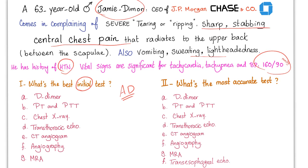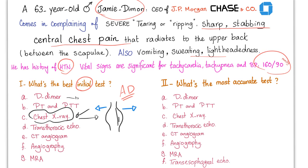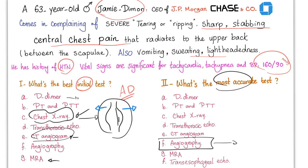What is the best initial test? Believe it or not, it's a chest X-ray — on your exam, always think cheap first. You would see a widened mediastinum because of the dissection. After that, you can go with CT angiography or MR angiography. But what's the most accurate test? Angiography — invasive angiography, where a probe enters the vessel, travels to the aorta, and images it directly. CT angio is not invasive; you just inject contrast before the CT scan. Those are very different things.